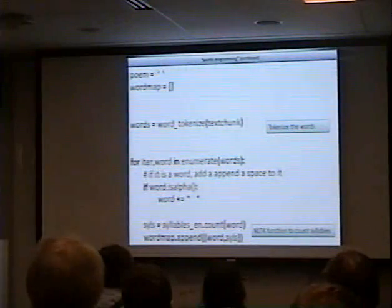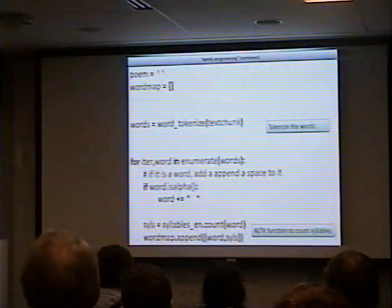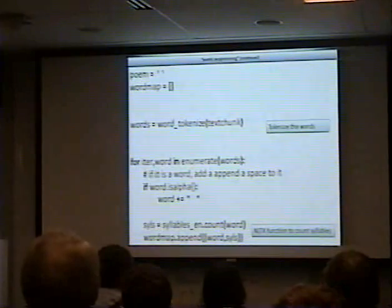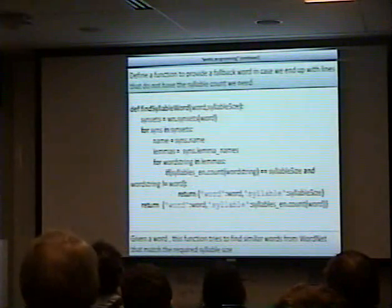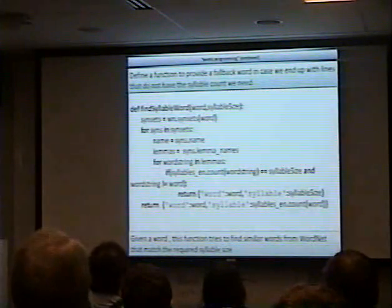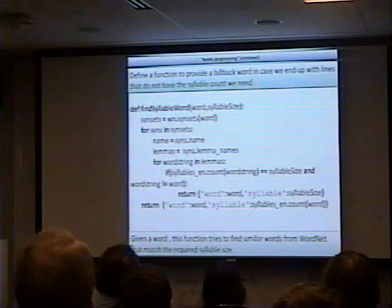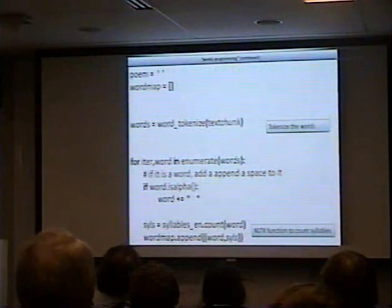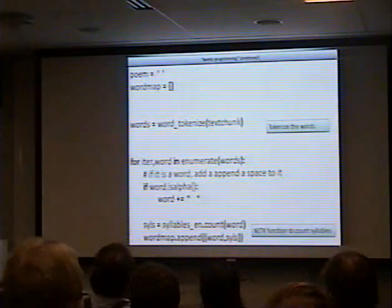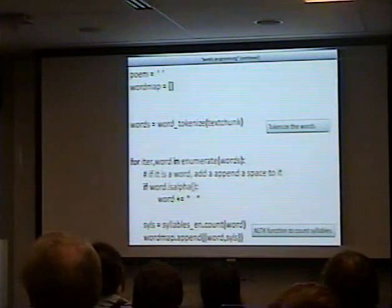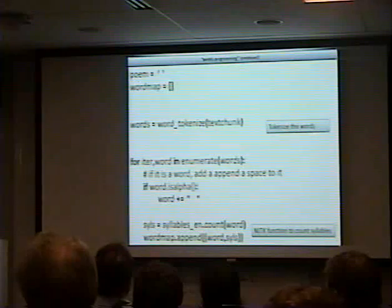Then we're finally going to append it to our list called word map. Word map — we're appending a tuple, and the tuples all contain the actual word and the syllable count next to it.